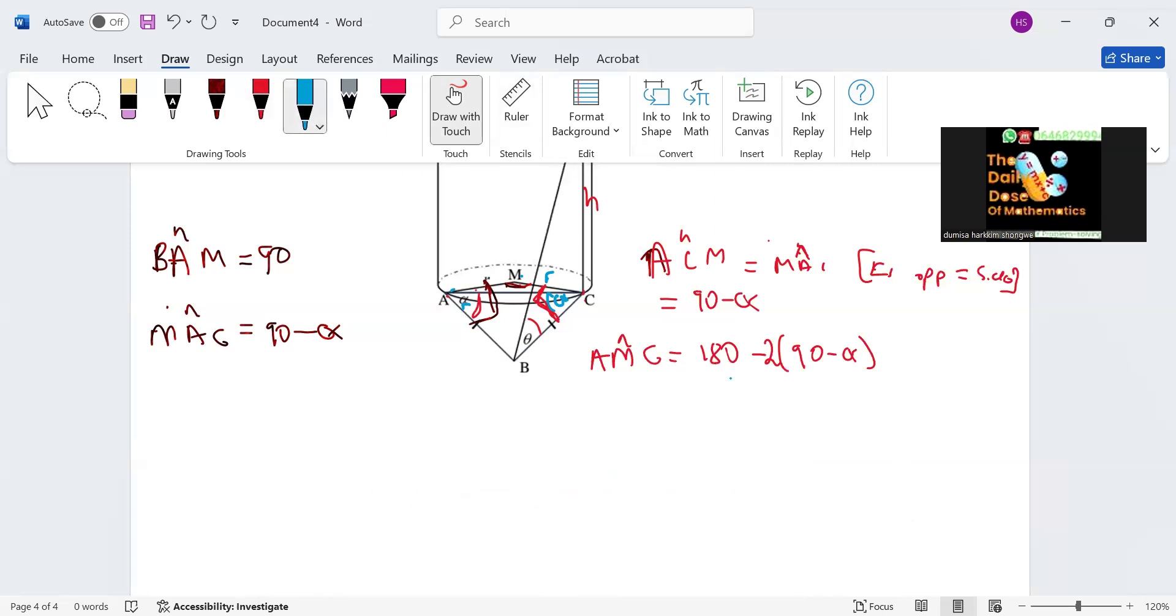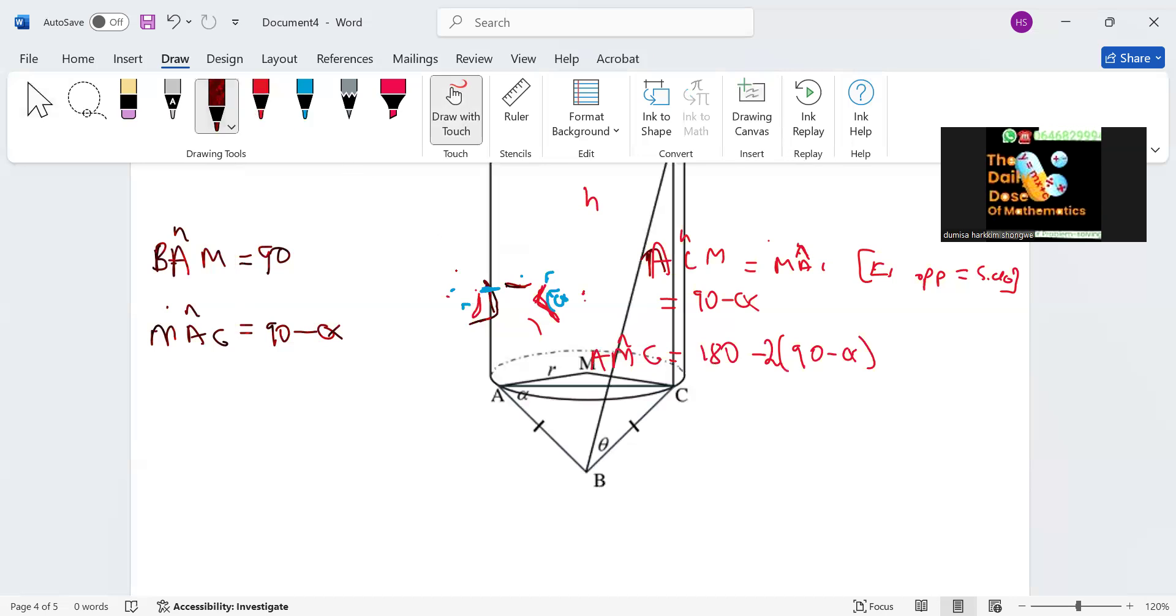We're talking about this angle here. This is 90 minus alpha, this is 90 minus alpha, and then we take it to the other side. Then we say AMC is going to be 2 alpha, so it means this angle here is going to be 2 alpha.